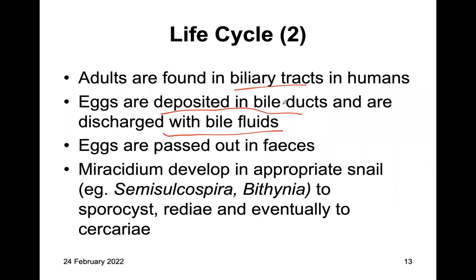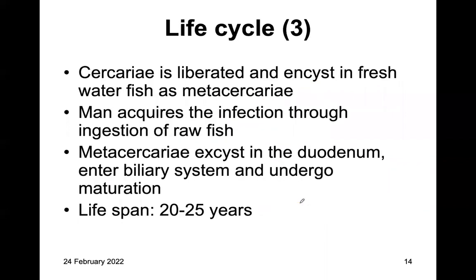An important difference: for hepatic flukes, the eggs get deposited in the bile ducts and passed out in feces. The miracidium develops in appropriate snails — Semisulcospira or Bithynia — into sporocysts, rediae, and eventually cercariae. The cercariae are liberated and encyst in freshwater fish as metacercariae. Man acquires infection through ingestion of raw fish — as is the case with Opisthorchis and Clonorchis sinensis.